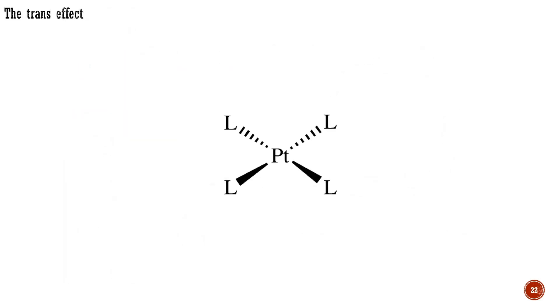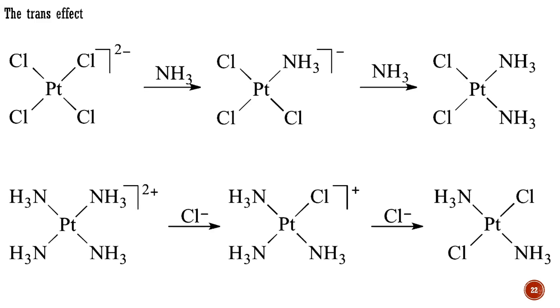Now let's consider platinum-2 complexes. These are four-coordinate and adopt a square planar geometry, as shown here. Platinum-2 complexes can react with incoming ligands to replace an existing ligand in a substitution reaction. Where a choice exists between two possible geometries of the product, as in these equations, the outcome is governed by so-called trans effect.